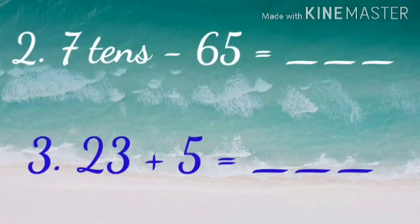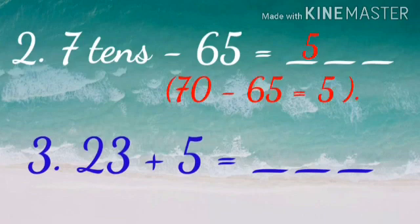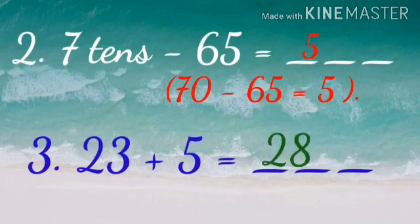Number 2. Question number 2. 7 tenths minus 65. That means 70 minus 65. We got the answer 5. Now, question number 3. 23 plus 5. Now, count on your fingers. Yes, we get the answer 28.